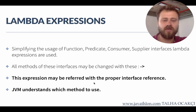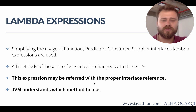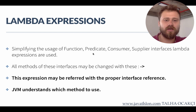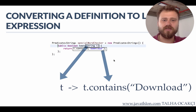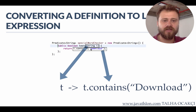JVM understands which functional interface you are implementing and automatically invokes the correct method. For instance, JVM understands that you are using a predicate if you are returning a boolean after the lambda expression. Here we have defined a predicate called 'spatial word checker' and it tests if our sentence has a specific word inside.